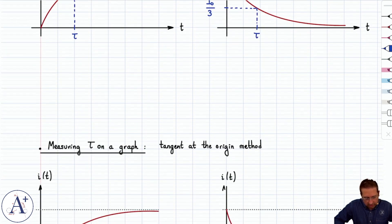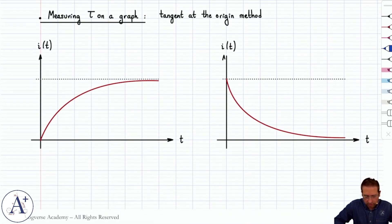Another way to find tau using a graph is to use the tangent at the origin method. And so you have, of course, the same two graphs where you have Imax for the rising current. That's the steady state. And then I0 is your initial current if you have the falling current in your RL circuit.